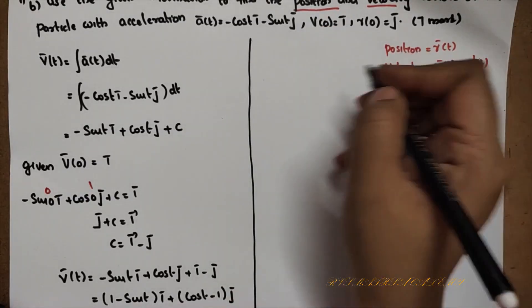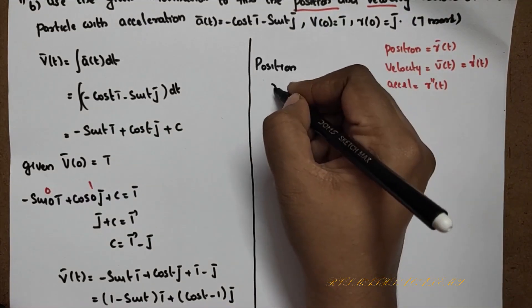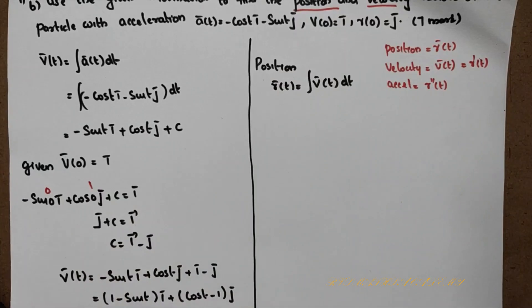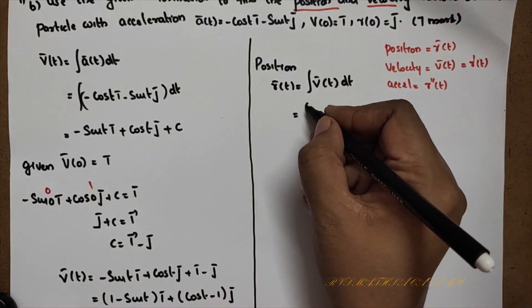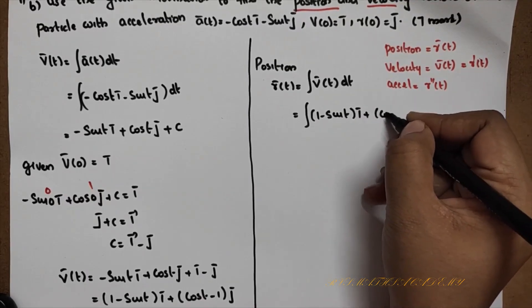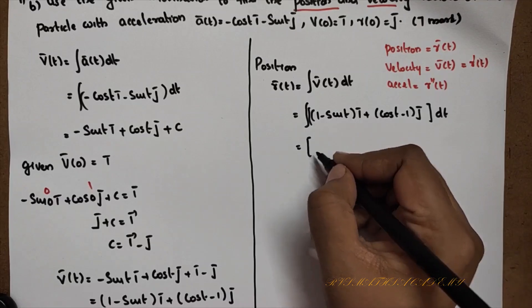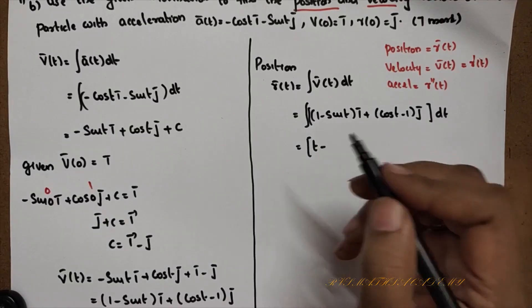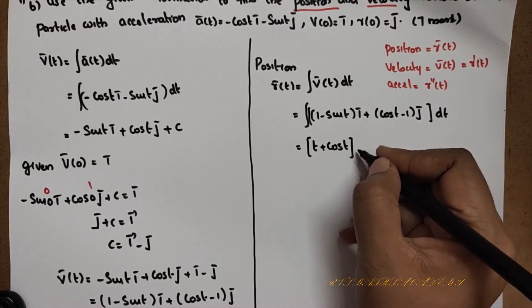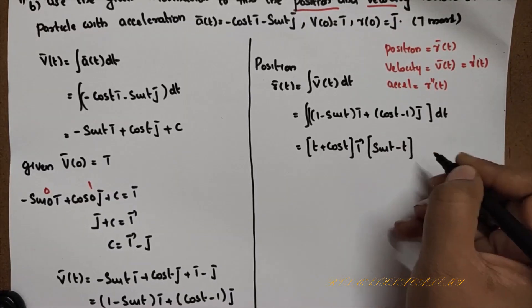To find the position vector, r(t) = integral of v(t) dt. Integrating (1 − sin t) i + (cos t − 1) j: integral of (1 − sin t) is (t + cos t), and integral of (cos t − 1) is (sin t − t). So r(t) = (t + cos t) i + (sin t − t) j + C.